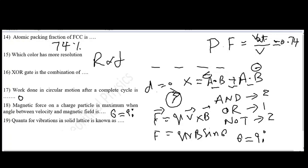Question number 19 is a simple nomenclature question. That is, quanta for vibration in solid lattice is known as, this is simply known as phonons. Here, quanta for light is called photon and quanta for vibration in solid lattice is simply known as phonons.